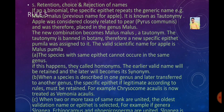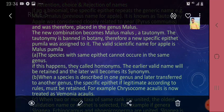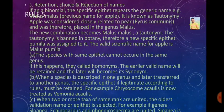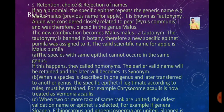Two species with the same specific epithet cannot occur in the same genus; if this happens, it is called a homonym. The earlier valid name will be retained and the later becomes a synonym. When a species is transferred to another genus, the specific epithet must be retained if legitimate. For example, Chrysocoma acolys is now treated as Vimonia acolys.